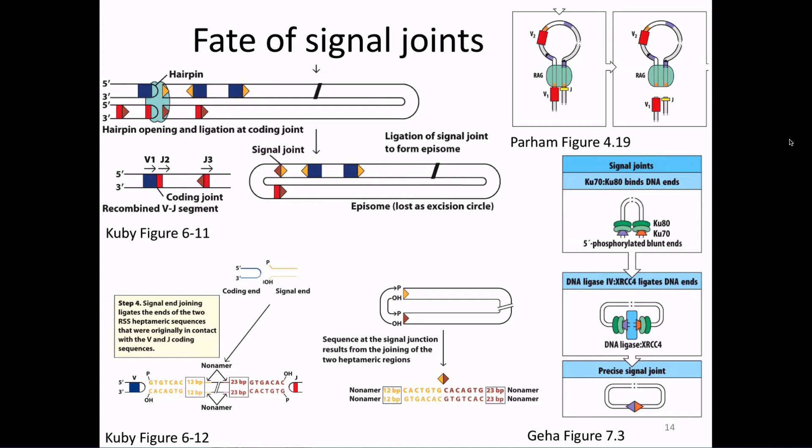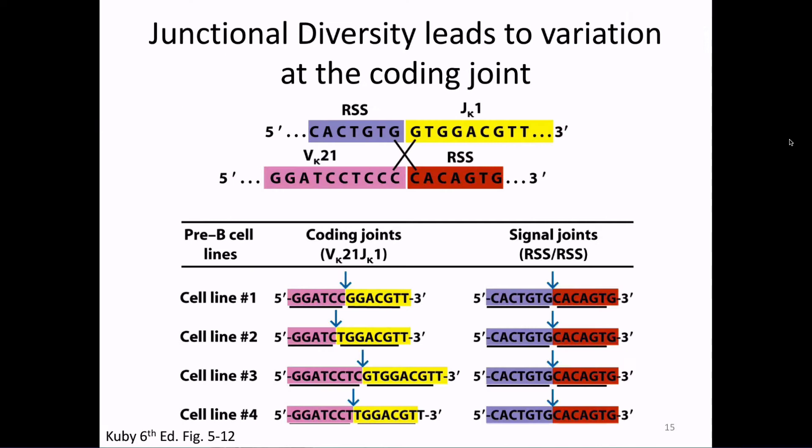Things get a little trickier at the coding joint. The coding joint includes the mini-gene — the V or D or J — and is going to be part of the DNA that actually codes for the antibody. The reason things get so tricky is because this is where the processes of junctional diversity come into play. When we join two mini-gene segments, we can sometimes get variation in the base pairs that come together, giving us that extra diversity.